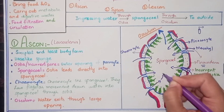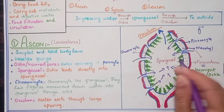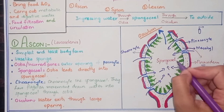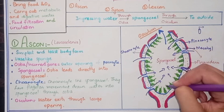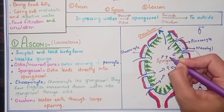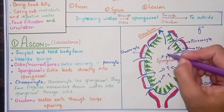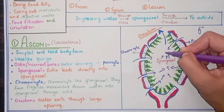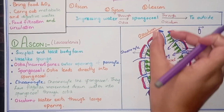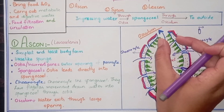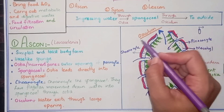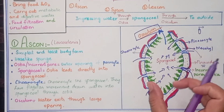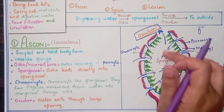After collection of water in the Spongocoel, food and oxygen diffusion occur. The waste material and metabolic wastes are then carried out along with water and released through a big pore at the top of the Ascon, which is known as the Osculum. This is the pore through which a large amount of water exits.